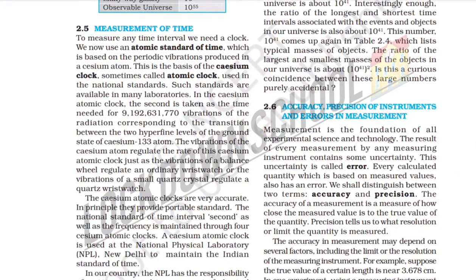Section 2.5: Measurement of time. To measure any time interval, we need a clock. We now use an atomic standard of time, which is based on the periodic vibration produced in a cesium atom. This is the basis of a cesium clock, sometimes called an atomic clock, used in national standards.